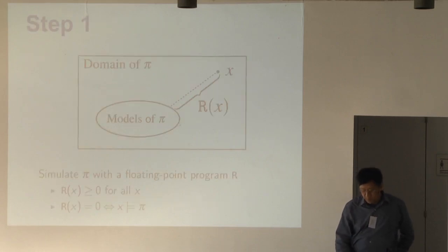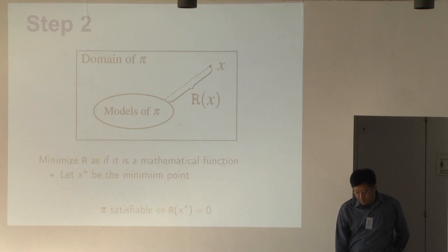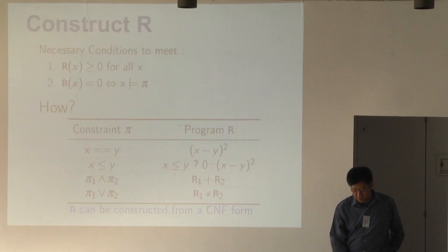Here's the general procedure. Now we have a constraint π and then we want to find all the models of π. What we do is we want to construct a floating point program R that measures the distance of how far X is to that set of models of X. And doing that we simulate the constraint with a floating point program R. We require R of X at every point to be non-negative. And also if R of X equal to zero, then we guarantee that X should certify the constraint. And so if we have R with these two conditions, and then we can just use mathematical optimization techniques to minimize R. It's guaranteed that the constraint π is certifiable if and only if X star minimizes the R equal to zero.